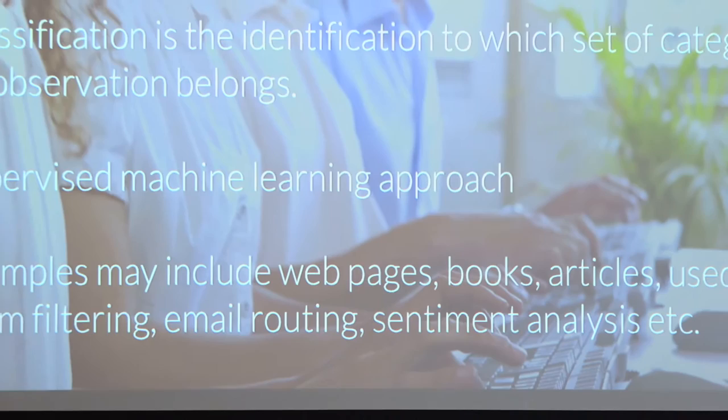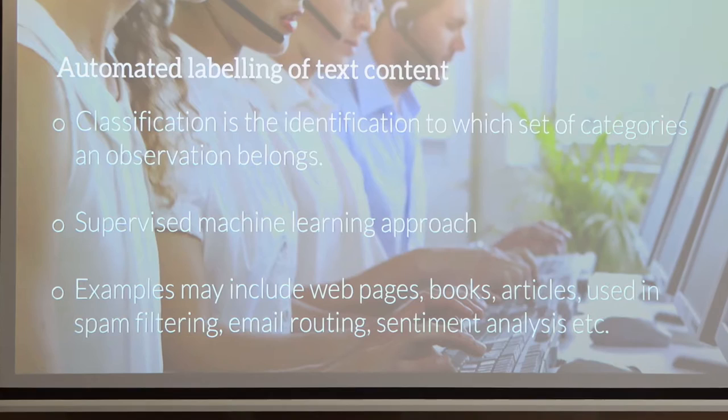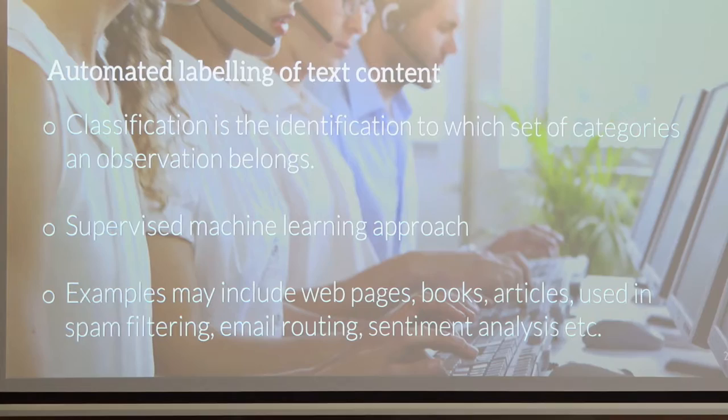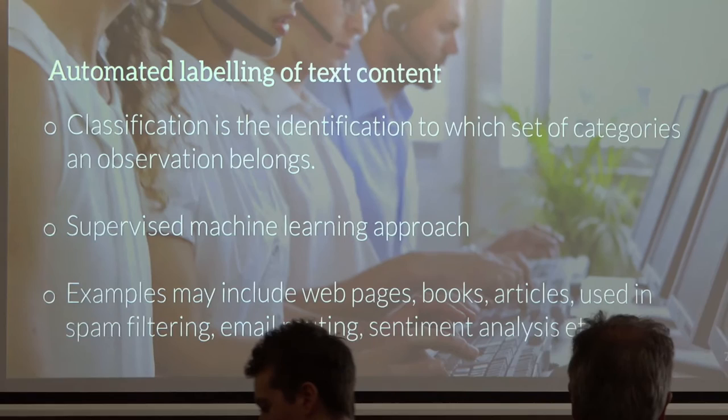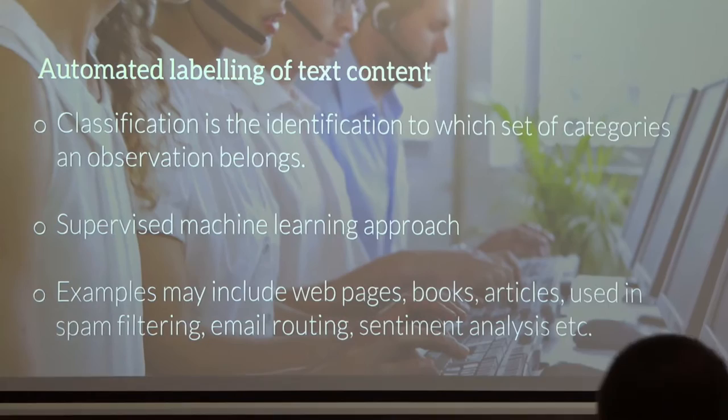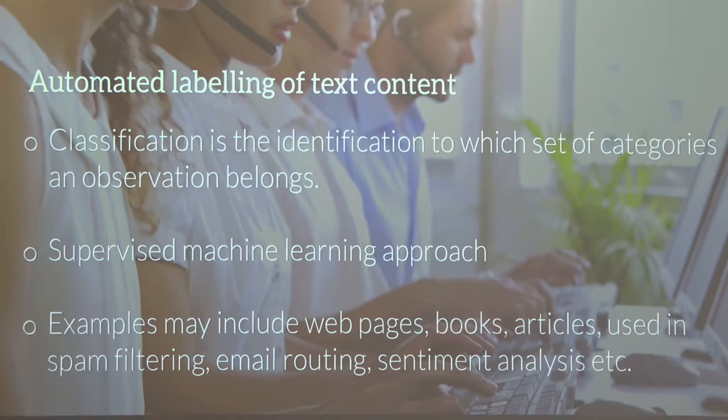For those starting out or not completely familiar with data science terminology, this talk is about text classification. Text classification is essentially the automatic sorting of text into categories. It's a supervised technique, so we start with labelled data and build machines to automatically categorise text into relevant labels. Examples include categorising web pages, book segments, articles, spam filtering — classifying emails as spam or not spam — and sentiment analysis.